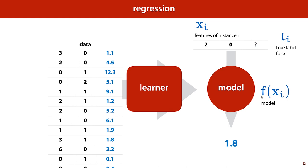The model we represent by a function f, and its prediction for instance i we represent as f(xi). This means that, broadly, our task is to get f(xi) as close as we can to ti.